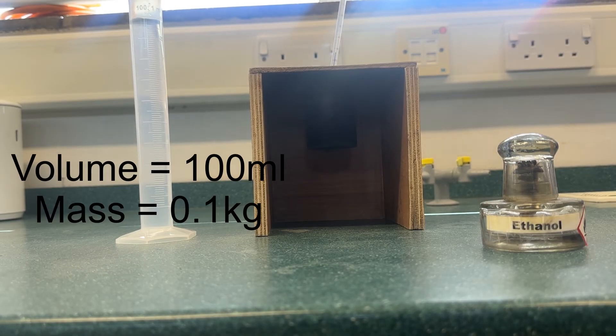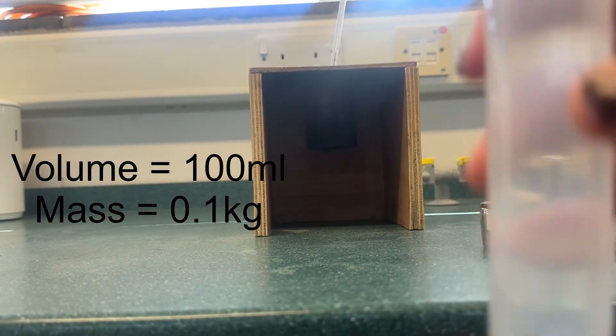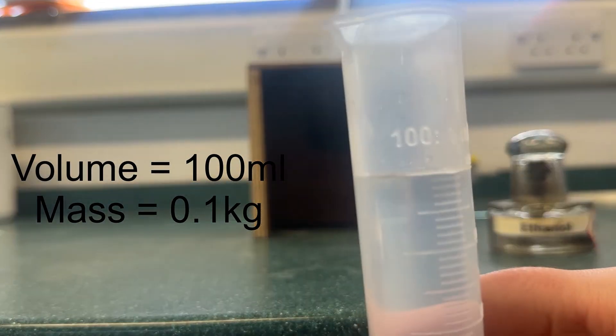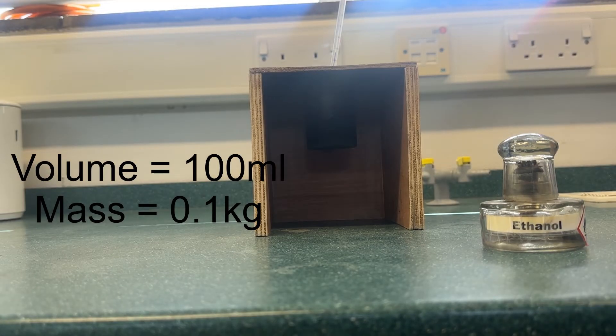After you've done this, you then need to measure out a known volume of water. Here we're going to use 100 millilitres of water. This will be the M in the E equals CM delta T equation. M is in kilograms.